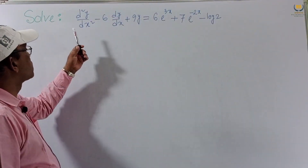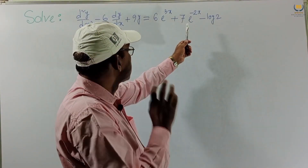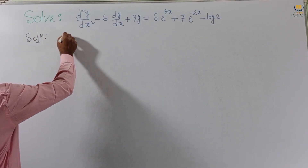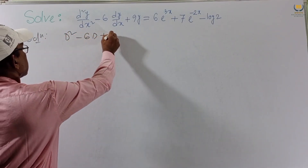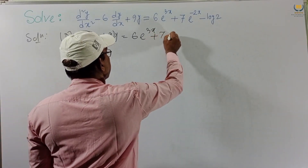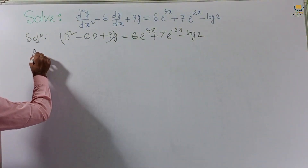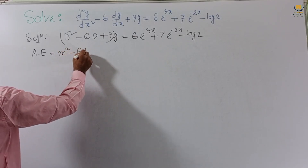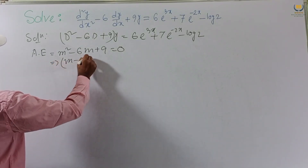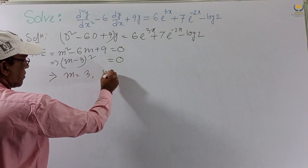Now consider Problem 3: solve d²y/dx² - 6dy/dx + 9y = 6e^(2x) + 7e^(-2x) - log2. We write (D² - 6D + 9)y = 6e^(2x) + 7e^(-2x) - log2. The auxiliary equation is m² - 6m + 9 = 0, which factors as (m-3)² = 0, giving m = 3, 3 (equal roots).